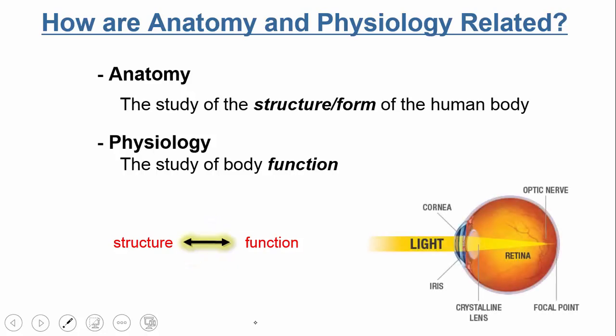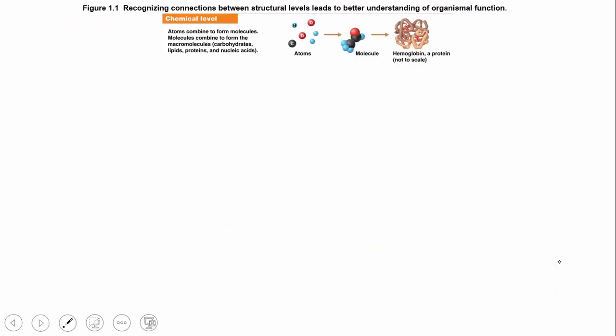A quick example: if we look at the human eye, we have something called the cornea, which is this transparent tissue at the surface of the eye. It's very important that it's transparent — that's the anatomy, that's the structure. Why? Because if it's transparent, it can allow light to pass through it, which helps you see. That's a classical case of function following structure, showing the interplay between anatomy and physiology.